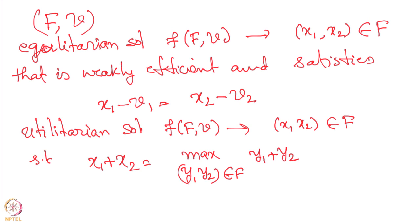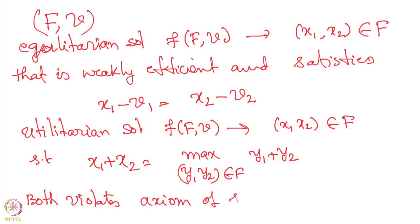In fact, both the egalitarian and utilitarian solutions violate the axiom of scale covariance. This is not hard to verify — you can confirm it using simple examples.